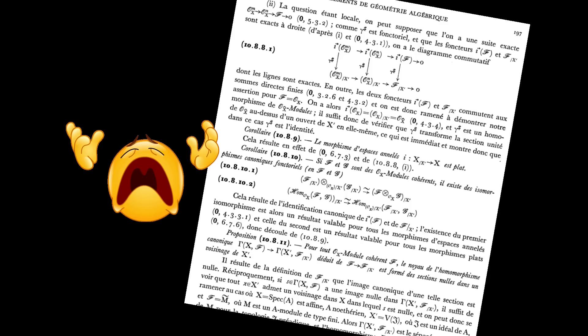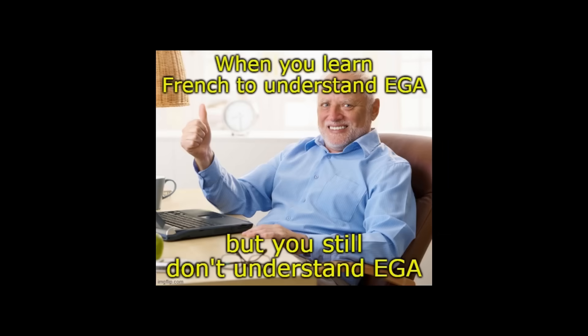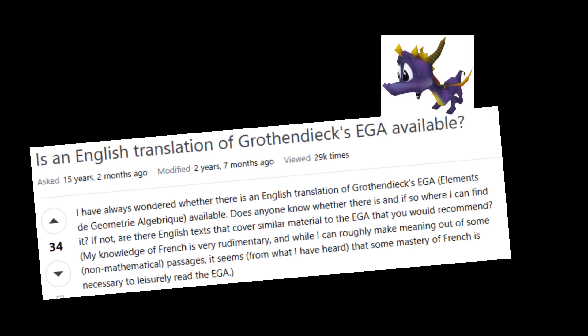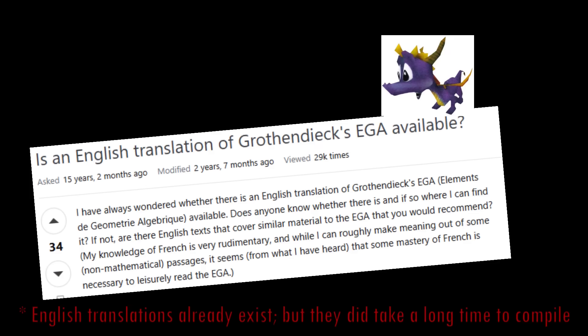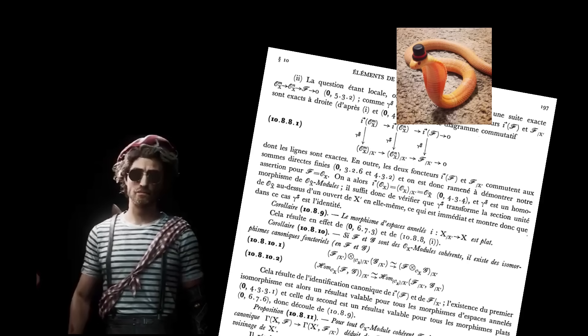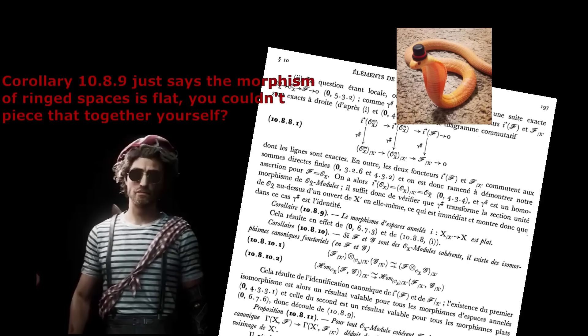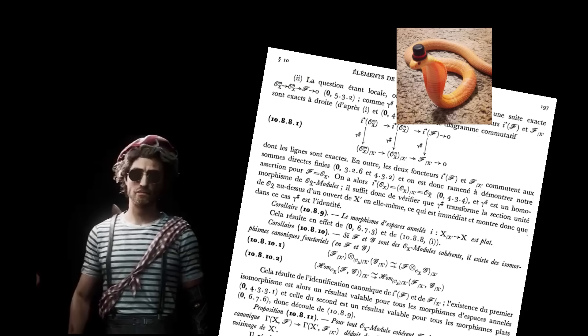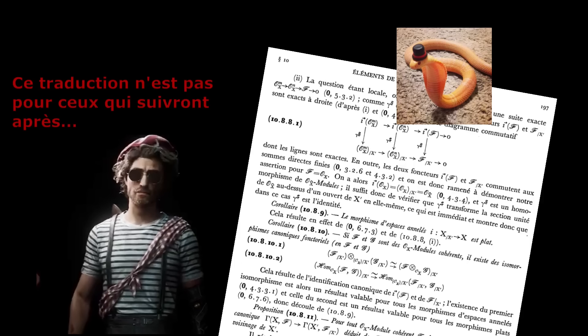For example, suppose you wanted to read les élémentes de géométrie algébrique, but you don't speak French. Ignoring the fact that the language is not the barrier to understanding the book, there are two solutions. The compiler solution would be to have the book translated to English, which you would only need to do once, but it might take some time. The interpreter solution would be to get your good friend Lumière 33 to read the book to you, translating on the fly. While this would have more immediate feedback, you would need to bring him around with you every time you needed to read something in the book.